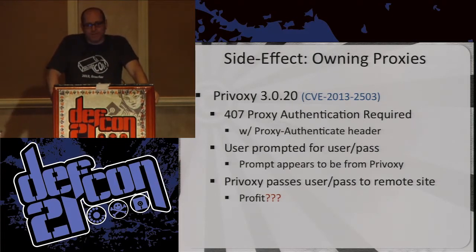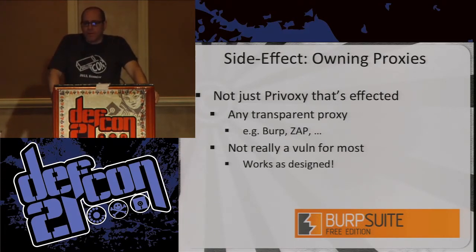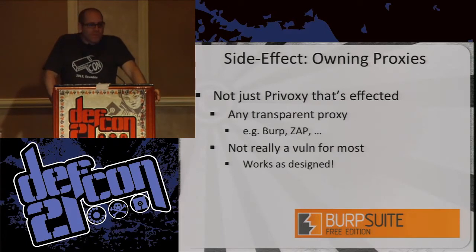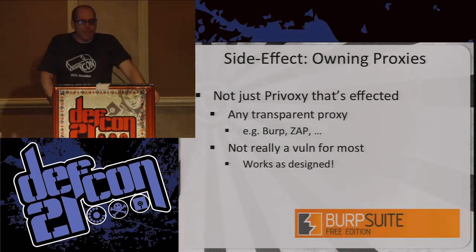Let's just say proxies aren't always configured quite so securely as they could be. There's a fix for that now in the latest version. But it's not just Privoxy — any transparent proxy, things like Burp or ZAP, are specifically designed to just pass everything you give them. So if my web server responds with a 407 and asks for authentication, Burp Suite will just pass it to your browser. So you can start screwing with people who you know are doing malicious things on your site with intercepting proxies.